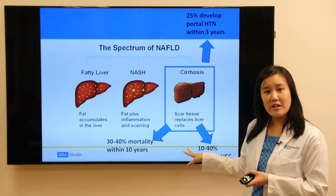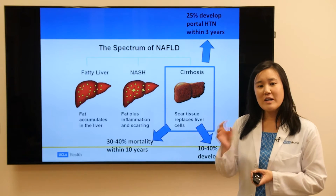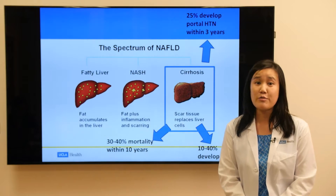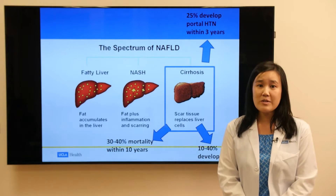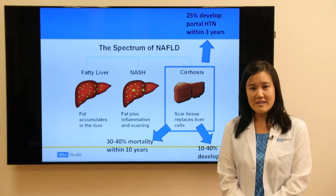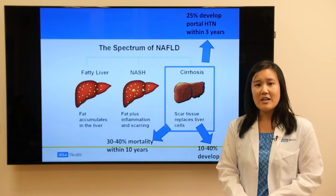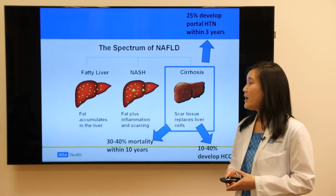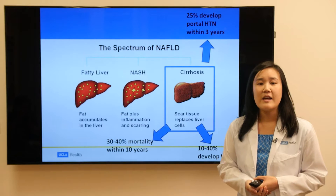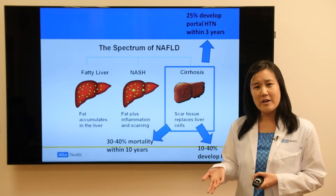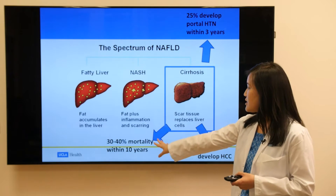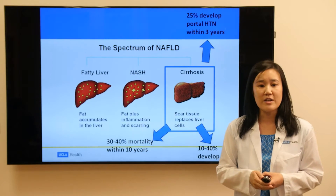Once a patient develops cirrhosis, the statistics are grim. About 25% of patients will develop portal hypertension within three years of diagnosis. Portal hypertension can lead to fluid accumulation in the abdomen, known as ascites, bleeding problems including vomiting blood, and an enlarged spleen. In addition, once a patient has cirrhosis, about 10 to 40% of patients can develop HCC, or hepatocellular carcinoma, or liver cancer. Overall, the mortality rate for patients with cirrhosis is about 30 to 40% within 10 years.